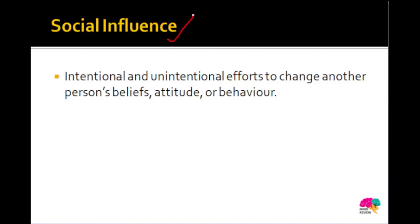First of all, we will learn about what is social influence. In social influence, conformity, compliance, and obedience are all included. Social influence is either the intentional or unintentional efforts that an individual applies to change another person's beliefs, attitudes, or behaviors — either intentionally or unintentionally. Within social influence, we can have three types: conformity, compliance, and obedience.